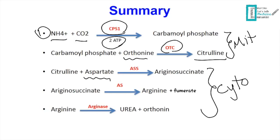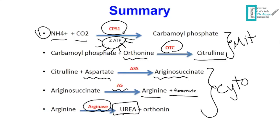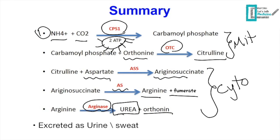By enzyme OTC, this gives us citrulline. Citrulline is transported into the cytosol and combines with aspartate via enzyme ASS to give us argininosuccinate. Argininosuccinate by argininosuccinate lyase gives us arginine and fumarate. Fumarate goes to the TCA cycle to provide the ATP needed for the rate-limiting step. Arginine by arginase gives us the end product urea, and ornithine, which returns to complete the second step. After forming urea in the liver, it is transported through the blood to the kidney to be excreted in urine, and can also be excreted as sweat.